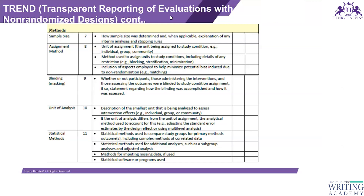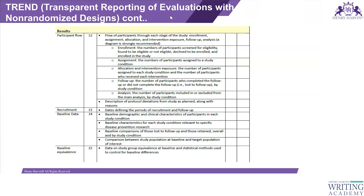After that, you mention the statistical method used for the study and the statistical software — similar to what is mentioned in a randomized controlled trial as per the CONSORT checklist. Then you describe the flow of participants in the same way as the CONSORT flow diagram, covering the same phases: enrollment, assignment, allocation, follow-up, and analysis.